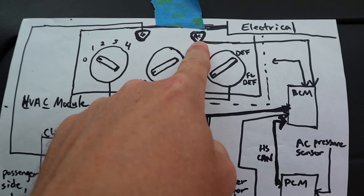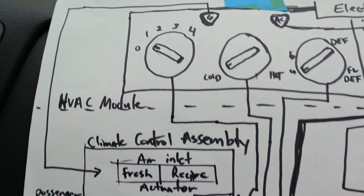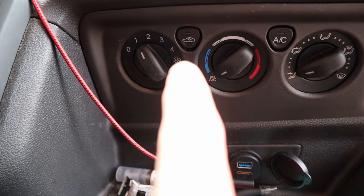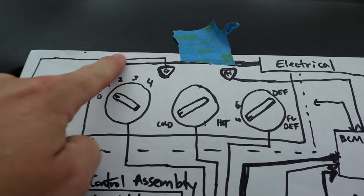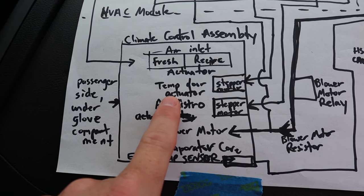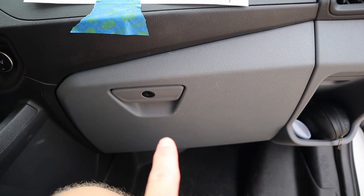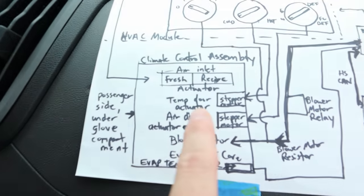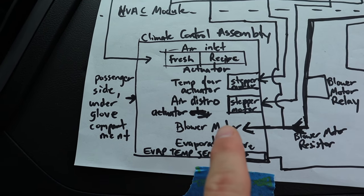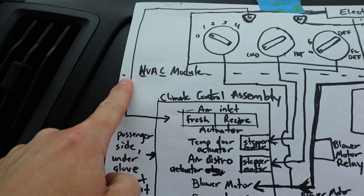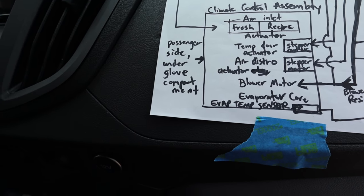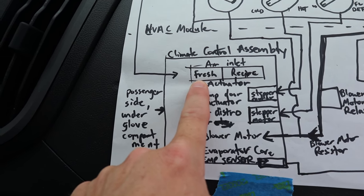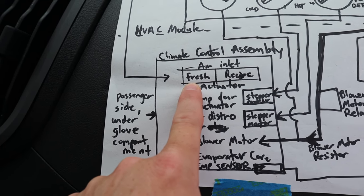A little later we'll connect Forscan and look at PIDs that show when the AC button has been pressed and when the AC clutch relay has been energized. The other push button on the HVAC control panel is the recirculation button, which controls an actuator — a motor that turns a door to either accept fresh air from the hood intake duct or recirculated air from inside the cabin.